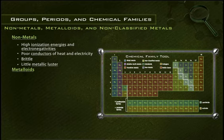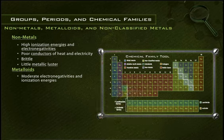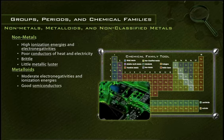Their moderate electronegativities and ionization energies are between those of the metals and nonmetals. Silicon, for example, possesses a metallic luster, yet it is a poor conductor and is very brittle, like nonmetals. Metalloids tend to make good semiconductors, which is why silicon is often used in computer chips.